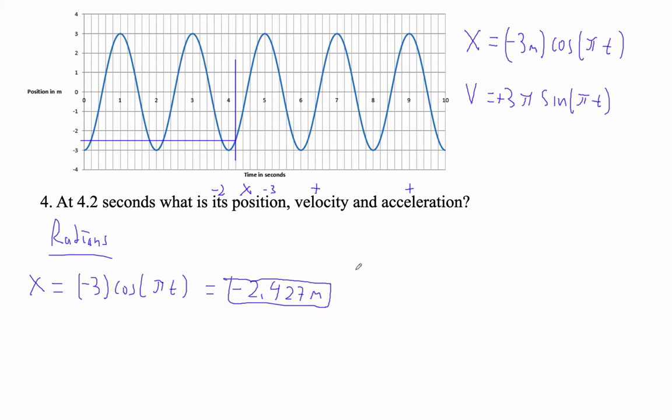All right, let's figure out what the velocity is. The velocity is going to be not super big, and it's going to be positive, because there's a positive slope. That slope is positive. So V is positive 3 pi sine pi t.